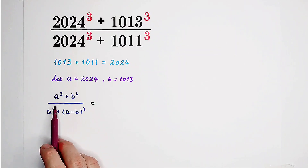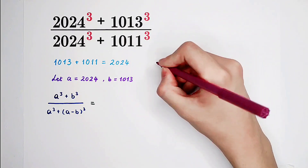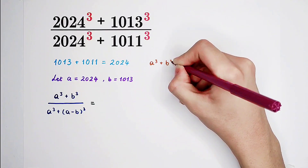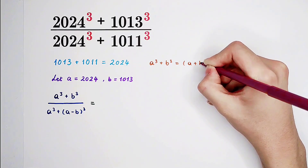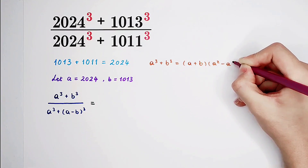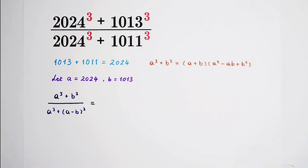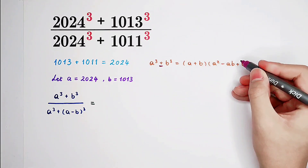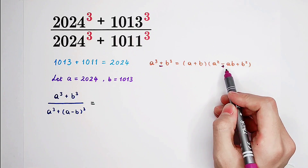Have a look at a cubed plus b cubed. We have a formula here: a cubed plus b cubed equals a plus b, times a squared minus ab plus b squared. And a cubed minus b cubed is a minus b, times a squared plus ab plus b squared. This is quite confusing.